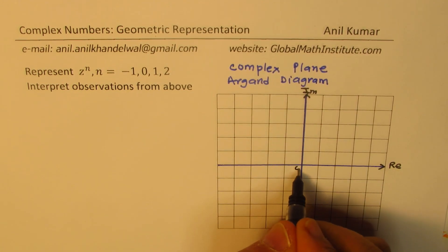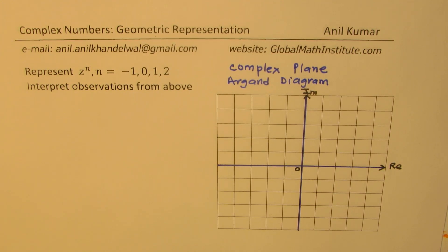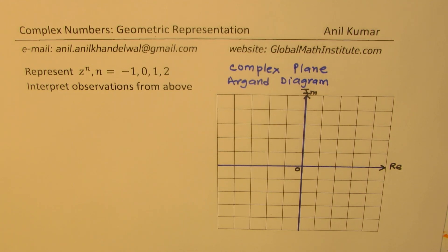The center is treated as 0, as we see in the Cartesian plane. Comparing with the Cartesian plane, the horizontal axis is the real axis, and the vertical axis represents the imaginary numbers.